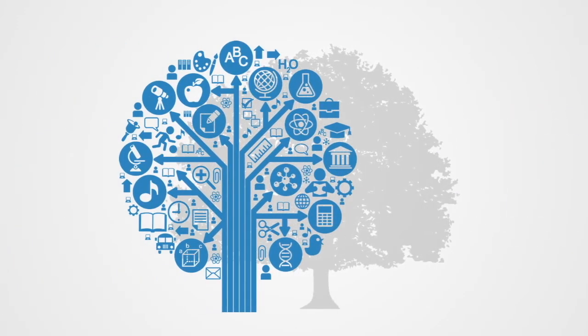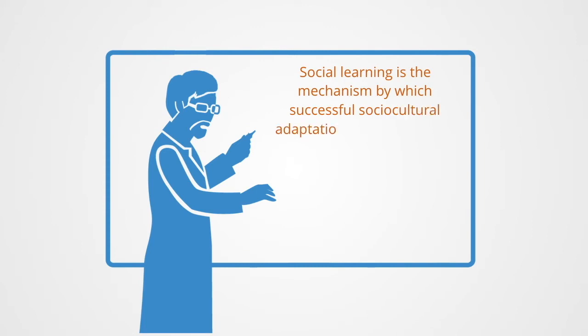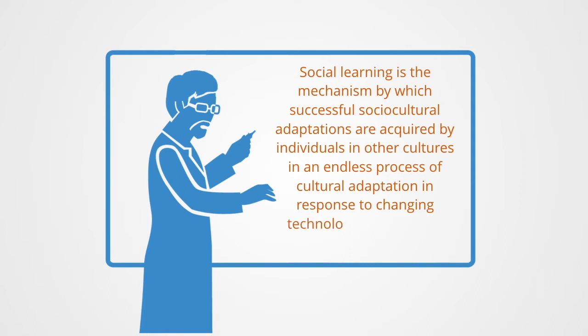Culture is typically defined in contrast to nature. That is to say that it is seen as a learned capability of humans as opposed to something that is biologically determined. The sociologist Marion Bluth, like Lenski, emphasizes this, positing that social learning is the mechanism by which successful sociocultural adaptations are acquired by individuals in other cultures in an endless process of cultural adaptation in response to changing technological, social, and economic conditions.